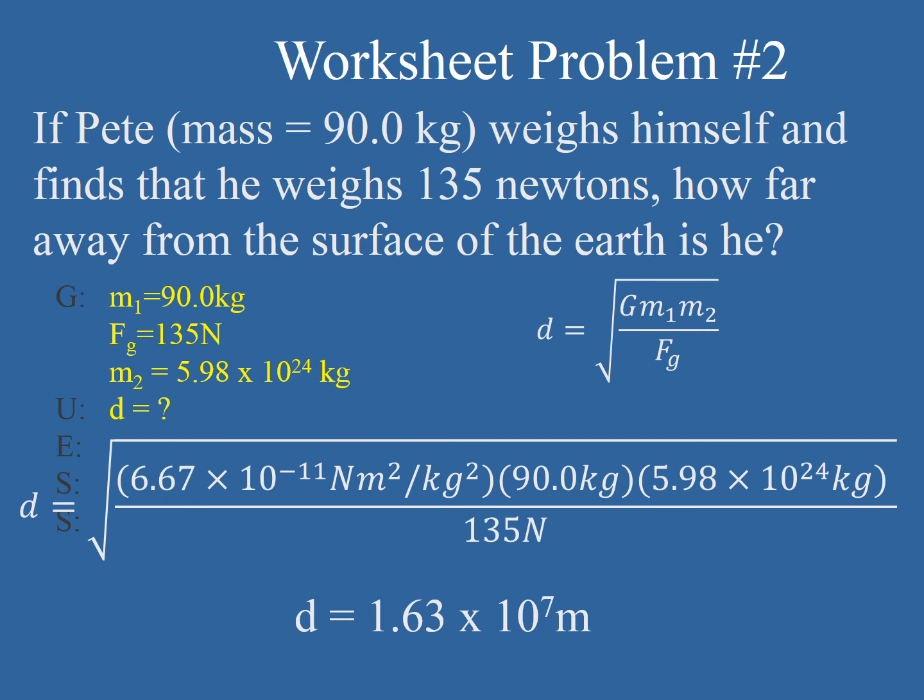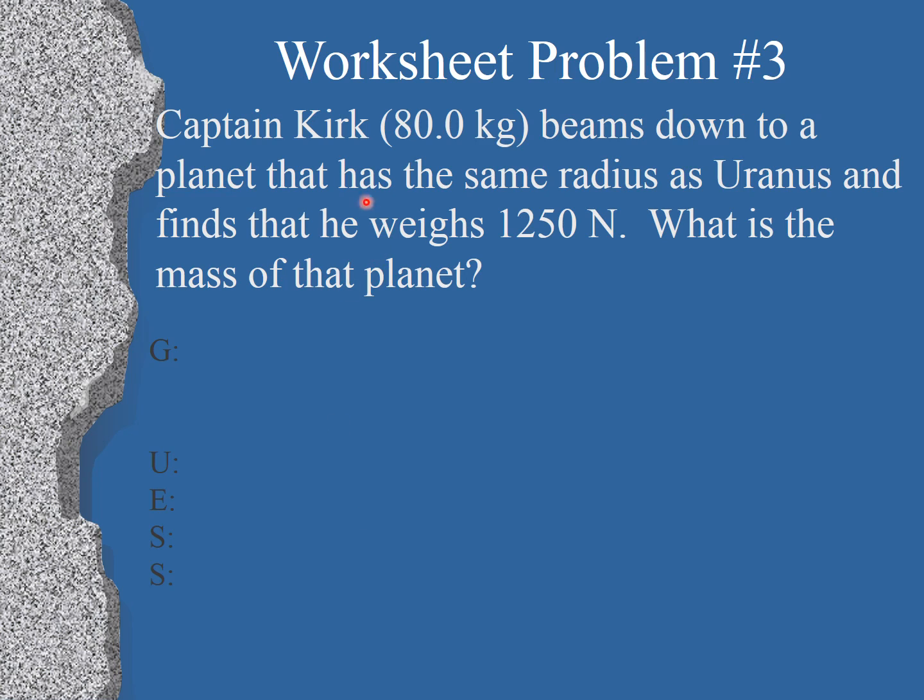Lastly, we're going to work on problem number three. Captain Kirk, who has a mass of 80 kilograms, beams down to a planet that has the same radius as Uranus and finds that he weighs 1,250 Newtons. What's the mass of the planet? So our givens are Captain Kirk's mass, 80 kilograms. The force of gravity on this planet, which is 1,250 Newtons. Now that's his weight on that planet. And the distance to the center of the planet from the surface is its radius. And since we know that it's the same as Uranus, we can look that up on the table at the top of the worksheet. 2.61 times 10 to the 7 meters.